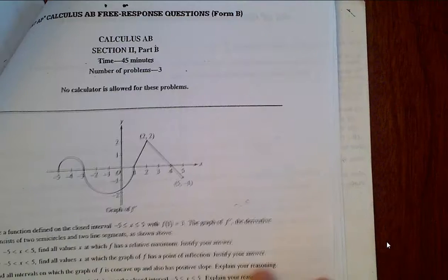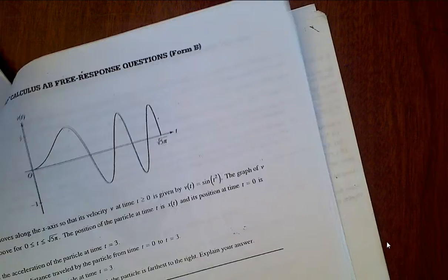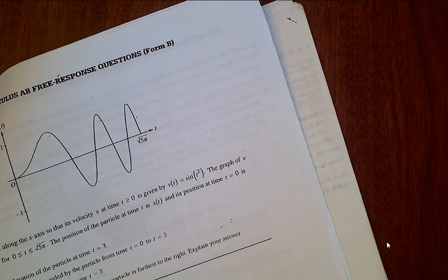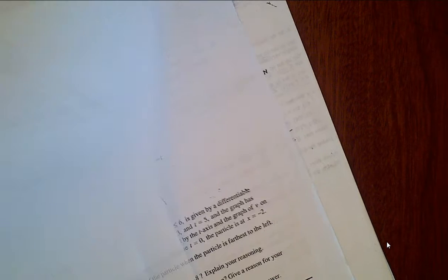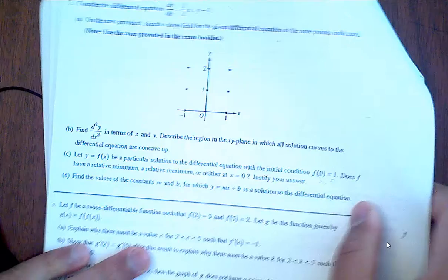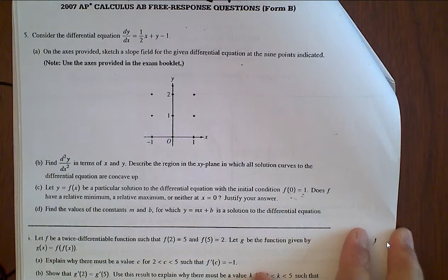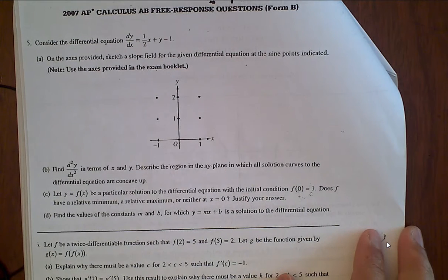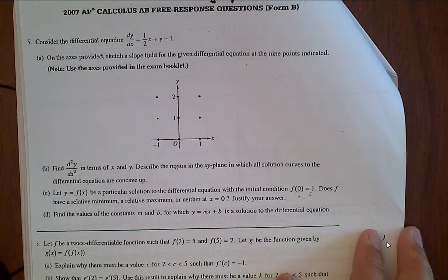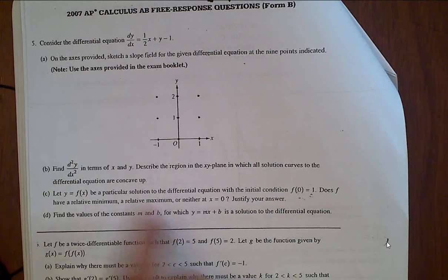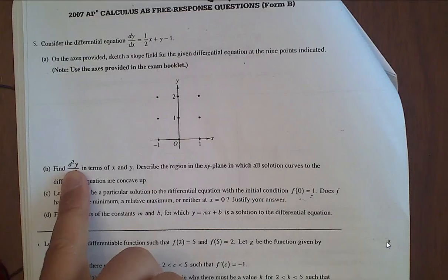Number 6 is. Okay. Okay, so here's our differentiable equation. Okay. 2007, number 5. Now, B is a tricky one. Let me just go ahead and tell you that right now.